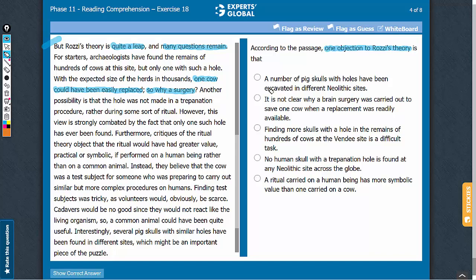Answer choice A: excavation of a number of pig skulls. This reference to several pig skulls with similar roles is in the context of the test subject theory and not in the context of Rosy's theory, so this answer choice can be eliminated.